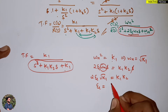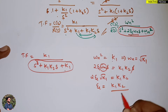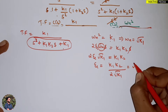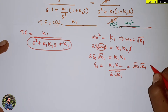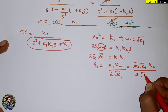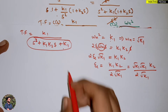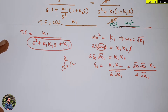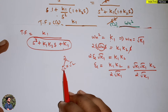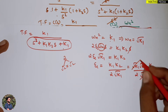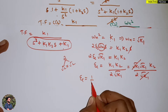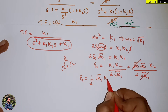From that equation, ζ equals k1·k2 divided by 2·√k1. Writing k1 as √k1·√k1, the √k1 terms cancel, giving the simplified result: ζ equals (1/2)·√k1·k2.